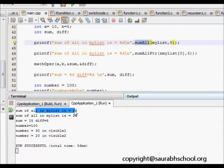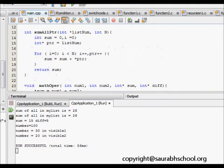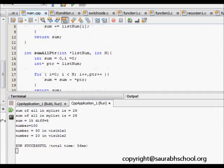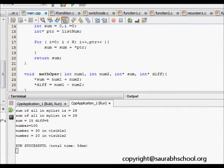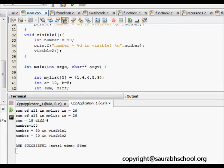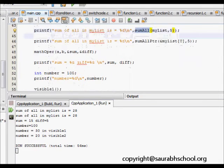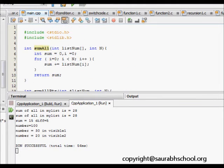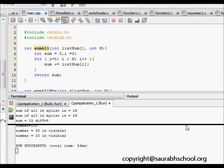We run the code and see that the sum of all numbers in my list is 28 using the first passing by array. Next thing is sum of all using pointers. Then the sum is 15, difference is 5. Now we see that when we call numbers, in the main the number is 100, when we go to visible1 it is 30, and when we go to visible2 it is 20.